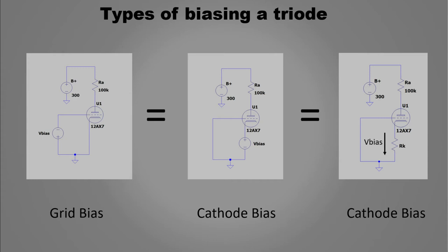So, in these pictures, if we maintain the difference between grid and cathode constant, the result will be the same.